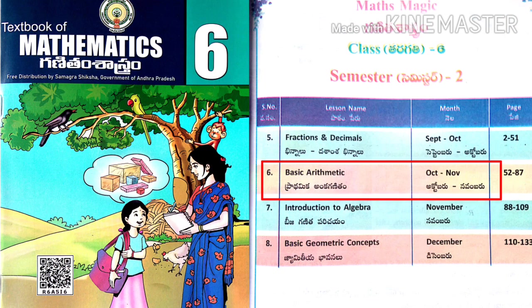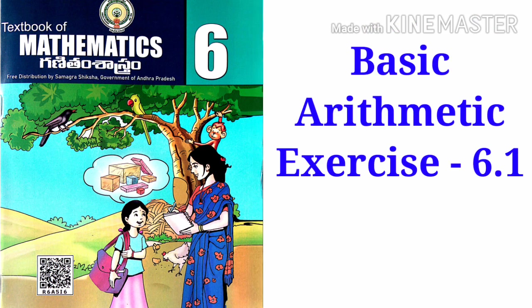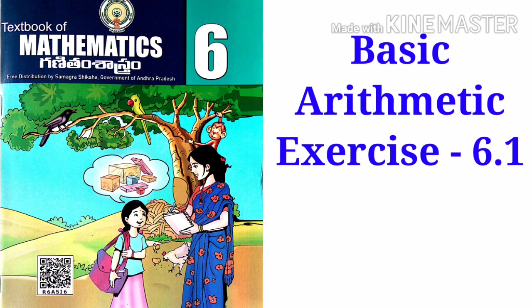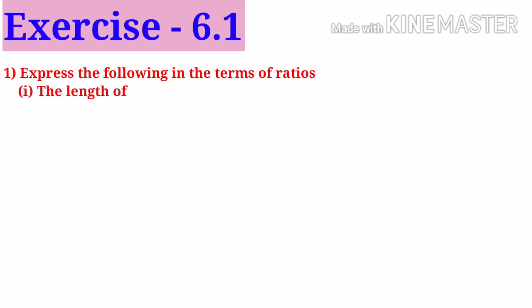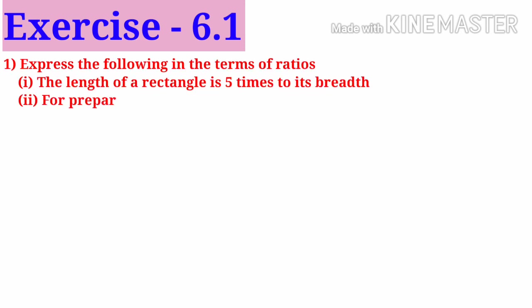Welcome to Shaker Maths. Today we are going to learn sixth class Mathematics Semester 2, sixth chapter Basic Arithmetic, Exercise 6.1 Problems. Exercise 6.1: Express the following in terms of ratios. Number 1, the length of a rectangle is 5 times its breadth. Number 2, for preparing coffee, 2 cups of water required to 1 cup of milk.